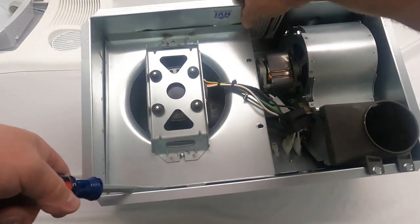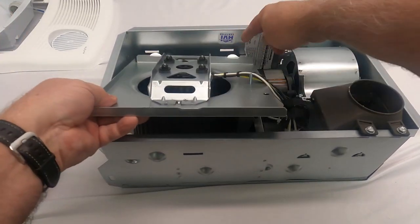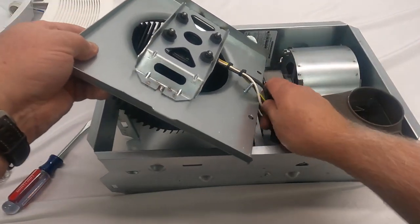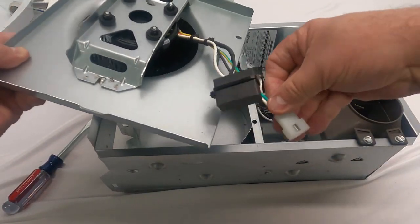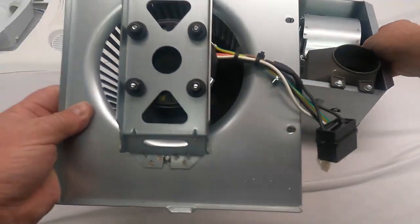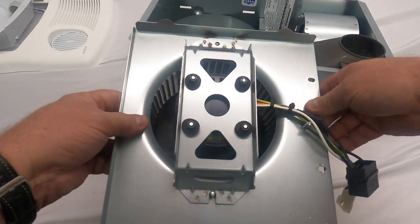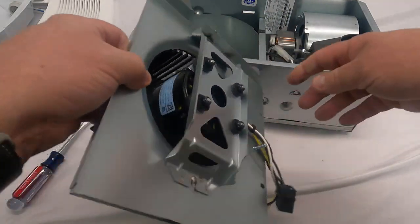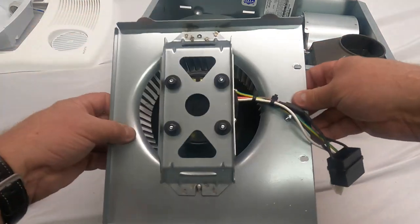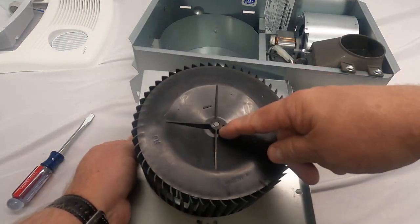That fan assembly will unlock and you'll have the whole thing in your hand and you can just unplug it. This motor assembly can be thrown out and a new one can be purchased if the motor has failed. The motor actually just comes out. There's four nuts holding that motor to the plate. This blower wheel just pulls off.